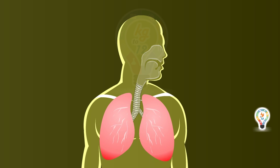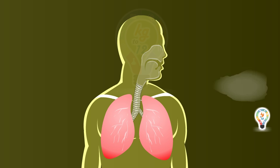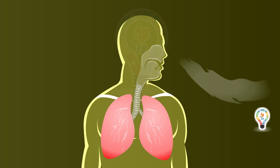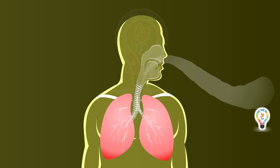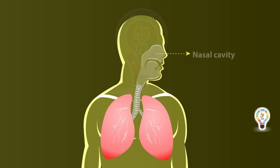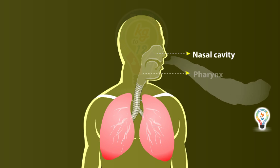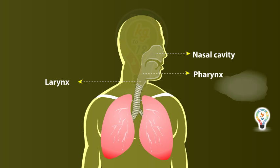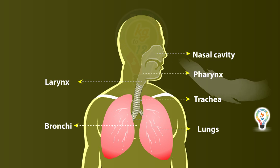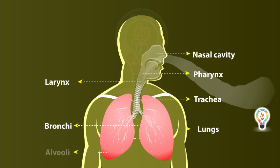Let's understand the process of respiration in human beings. The organs taking part in the process of respiration are nasal cavity, pharynx, larynx, trachea, bronchi, lungs, and alveoli.